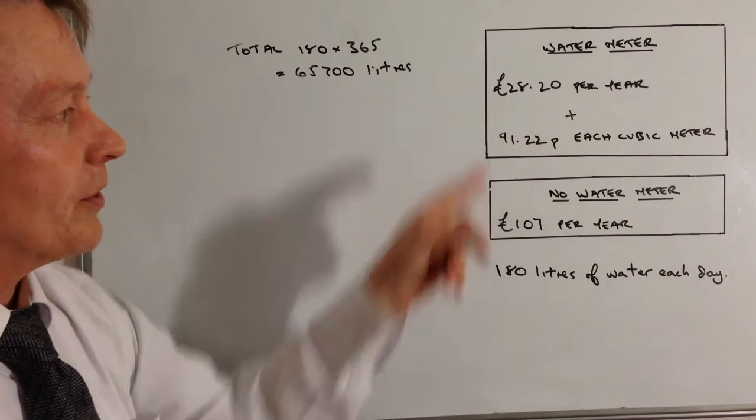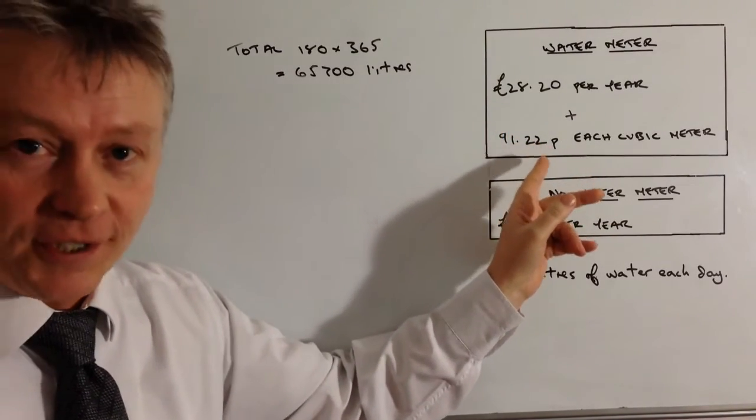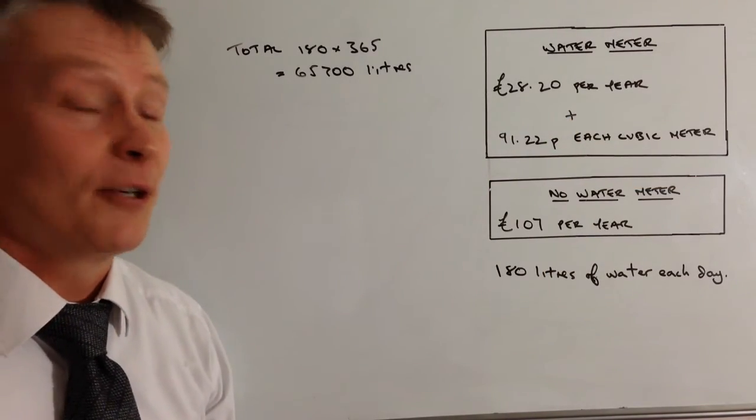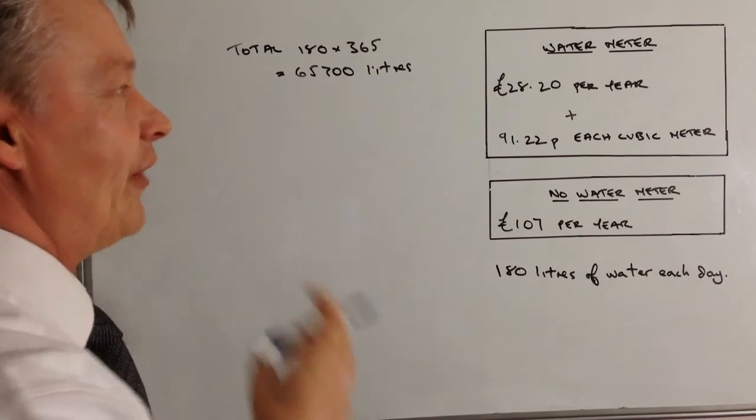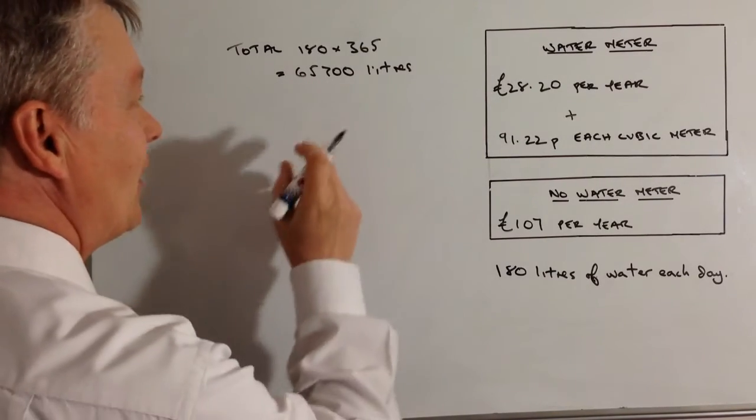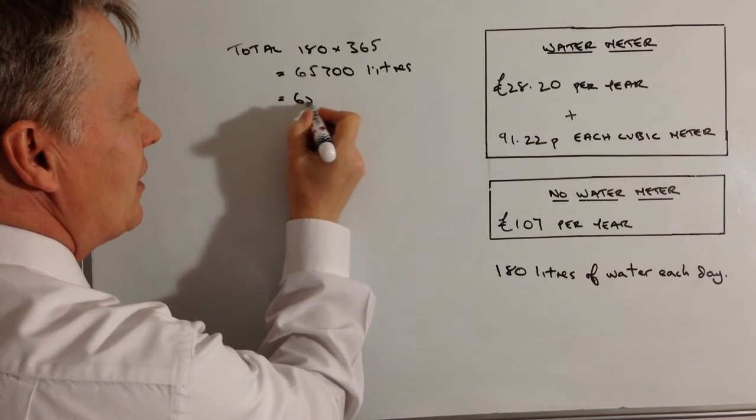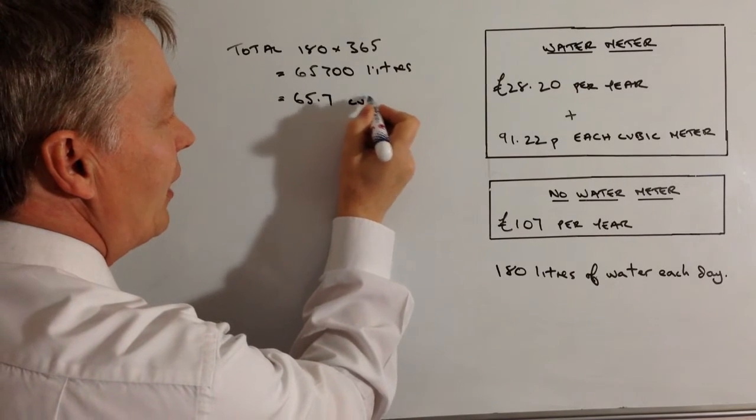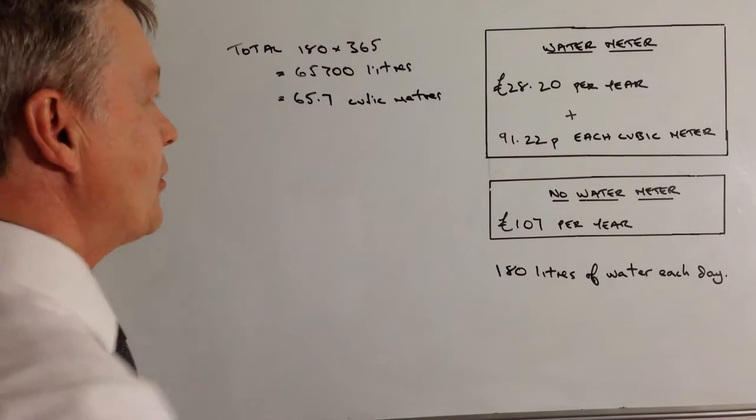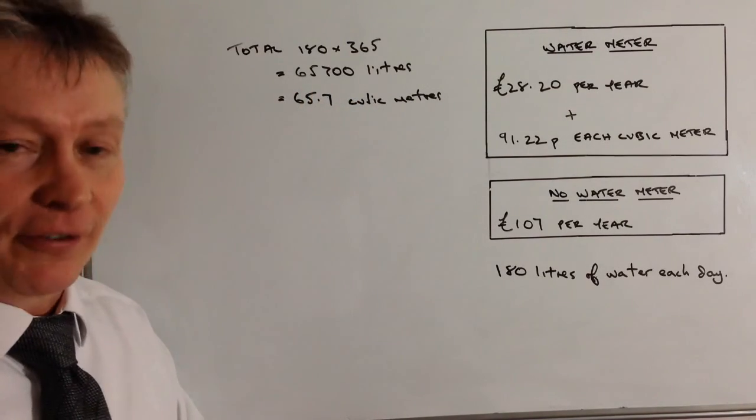So the thing about the water meter is it gives you a standing charge of £91.22 per cubic metre. So one of the things you need to know with this is that there are a thousand litres in a cubic metre. So if we divide that through by a thousand we've got 65.7 cubic metres of water which is exactly the same as 65,700 litres but you have to know that conversion.